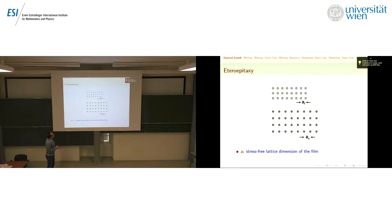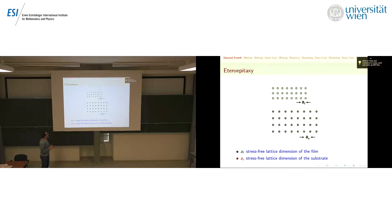There are two types of epitaxy: homoepitaxy, if the two materials are the same, and heteroepitaxy if the materials are different. Here we are going to consider the case of heteroepitaxy. The substrate and the film have two different lattice dimensions.